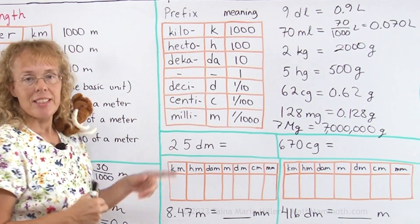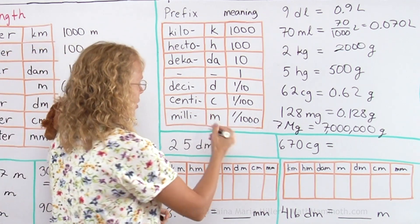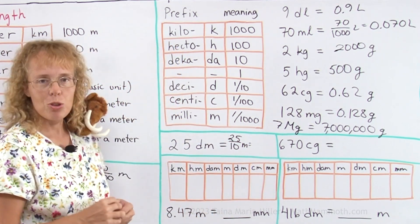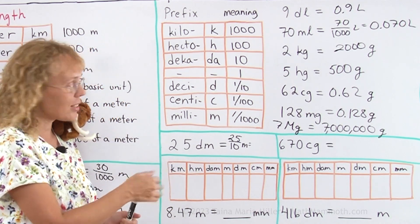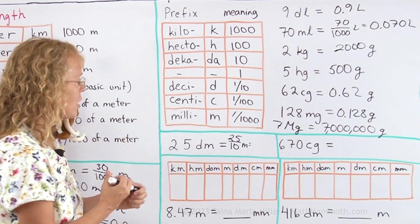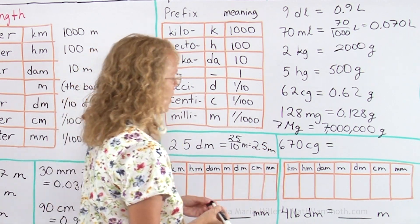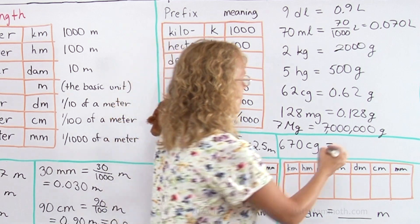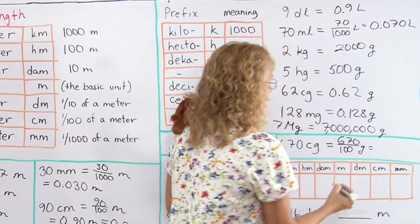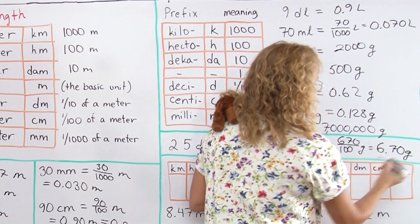Two more. 25 decimetres. Deci meaning tenth part, so I have 25 tenths of a meter. And you can either use fraction math to say that this is going to be two and five tenths, or you can think that if it had been twenty, I would get exactly two meters, and then the 0.5 will follow, 2.5 meters. 670 centigrams, 670 hundredths of a gram. This makes six whole grams. 6.70 grams.